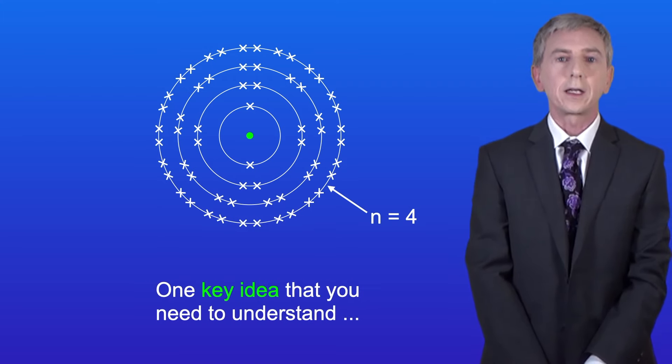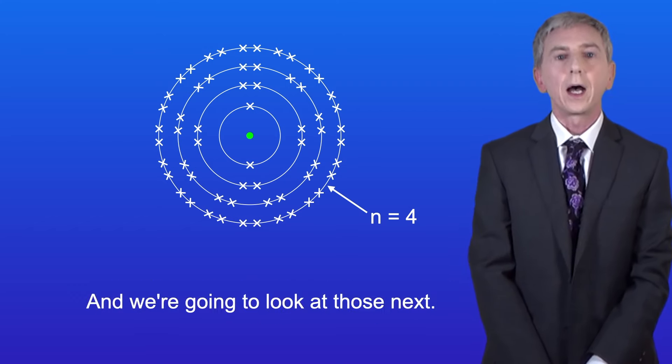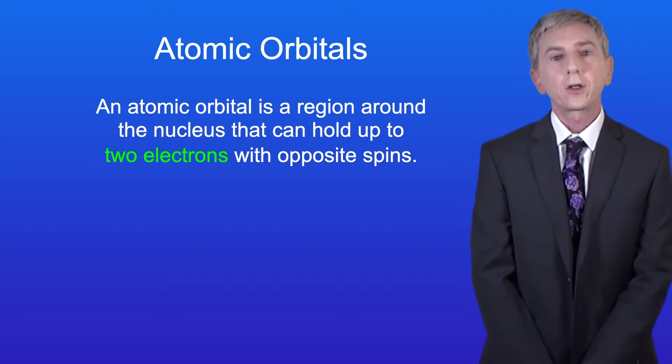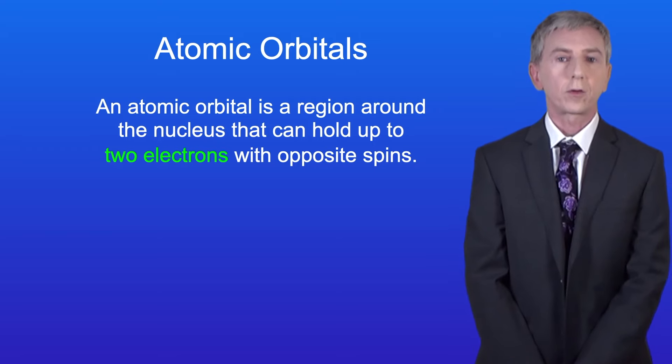Now one key idea you need to understand is that the electrons in a shell are found in regions called atomic orbitals, and we're going to look at those next. An atomic orbital is a region around the nucleus that can hold up to two electrons with opposite spins.